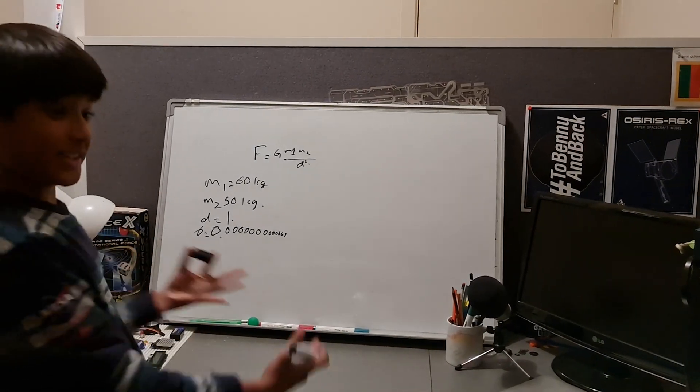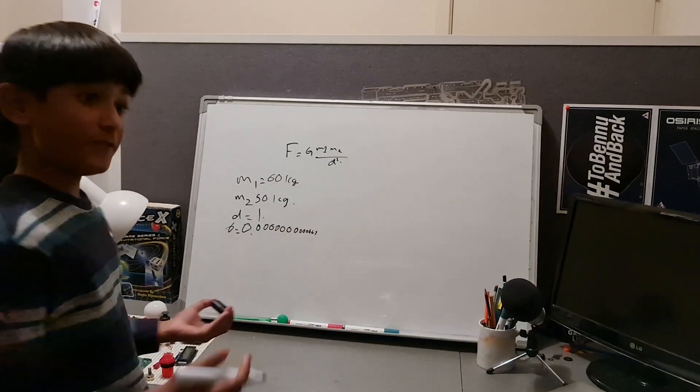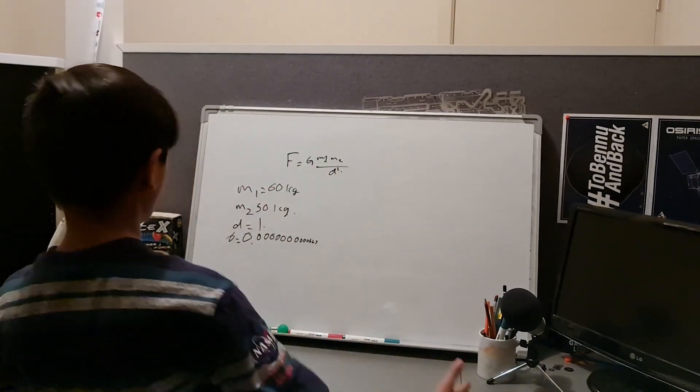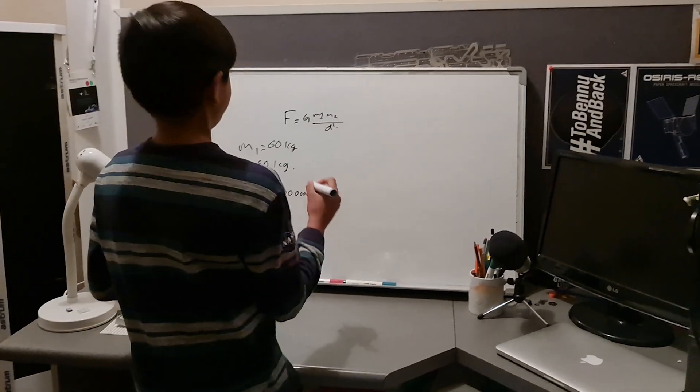And then now we just work through to get our force in newtons. We just need to put this into the formula. If you put this in, this is what we're going to get: the force of gravitational interaction between these 60 kilograms and 50 kilograms objects.